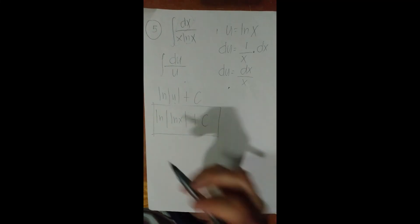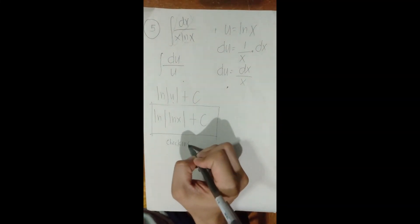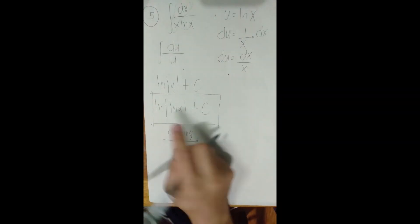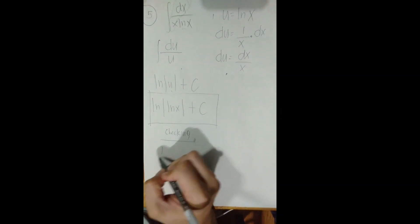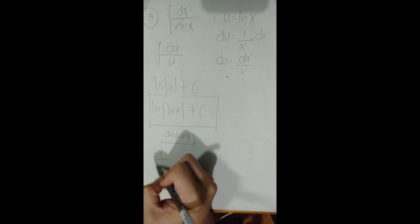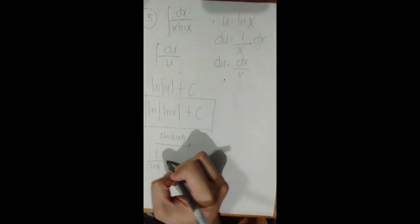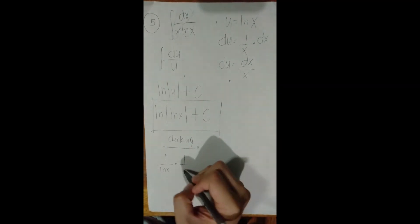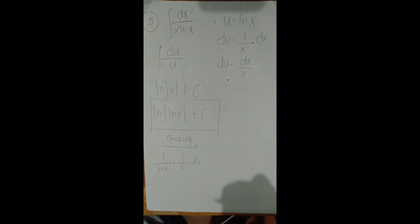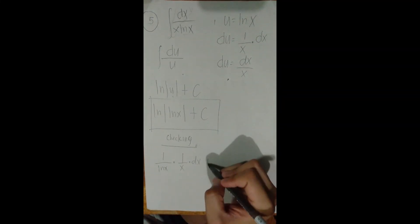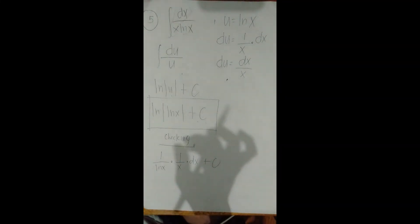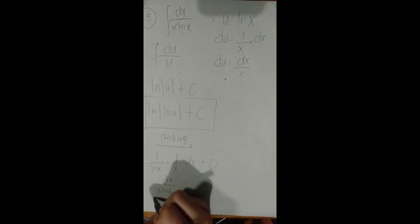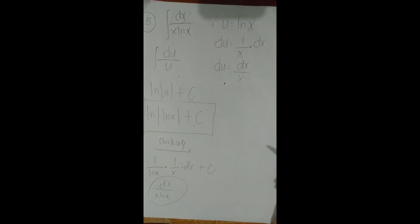For verification: the derivative of ln(ln(x)) is 1/ln(x) times the derivative of ln(x), which is 1/x, times dx. The derivative of the constant is 0. So the result is dx / (x · ln(x)), which matches our original integrand. The integration is correct.